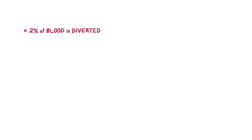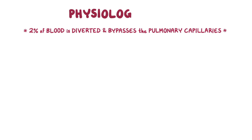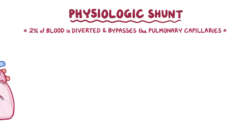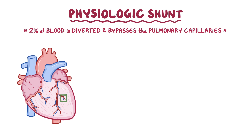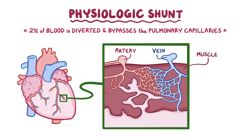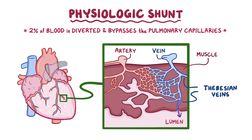Normally, about 2% of the blood follows a slightly different path. It's diverted or shunted so that it bypasses the pulmonary capillaries, and this is called a physiologic shunt. There are two main ways this happens. First, when blood goes out to the heart muscle itself, it returns through tiny veins called Thebesian veins. Rather than draining into the venous system and going into the right atrium, these veins sometimes dump that blood into the closest chamber of the heart.